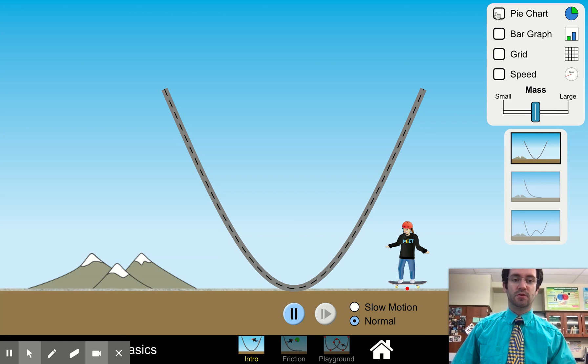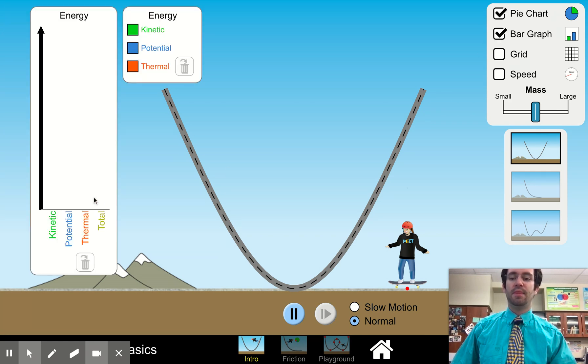So the things that will help you the most are to turn on the pie chart and the bar graph that will help you see what's happening with the different types of energy. So you'll notice in the first version there's no friction. So we're not going to have any thermal energy.